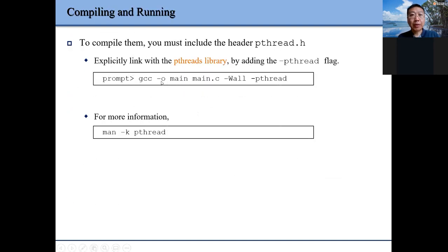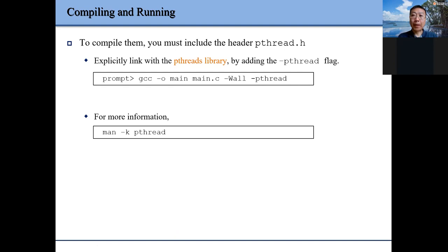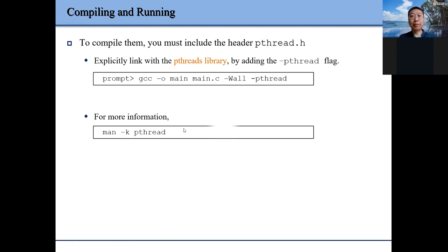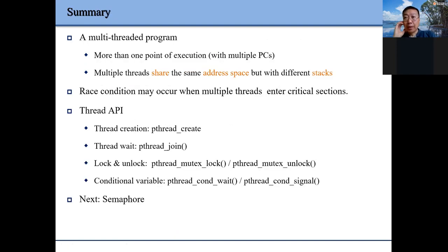For compilation: if you want to use pthread, you have to include the -lpthread argument when you compile, otherwise it will fail. Please try it and you'll know what I'm talking about. You can use the man page to get more information. Let me first summarize this part, then I will go back to answer some questions, and we move on to the lab.